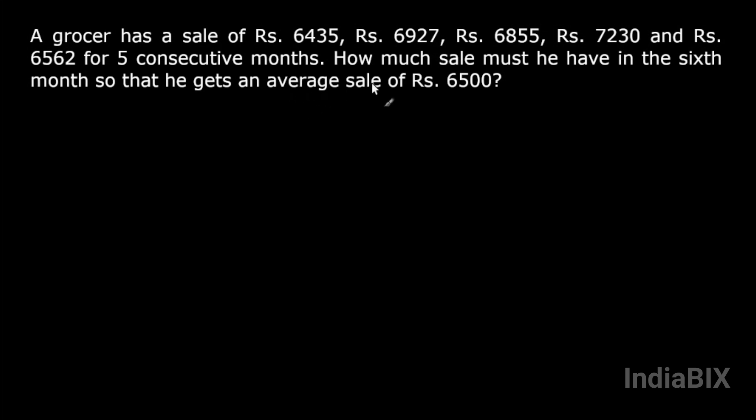In order to have an average sale of rupees 6500 for the period of six months. Here the average sale for the period of six months is given and that is rupees 6500, and the monthly sale for five consecutive months is given.